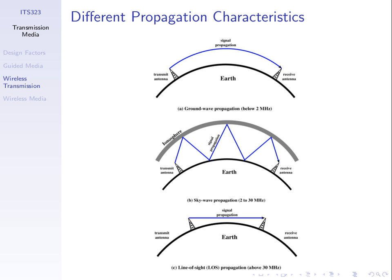We can see the benefits of ground wave and sky wave in that we can cover potentially larger distances — in theory, all the way around the Earth — as long as we transmit with a strong enough power. But with frequencies above 30 MHz, we're restricted to line-of-sight communications and cannot send all the way around the Earth because the Earth is round.